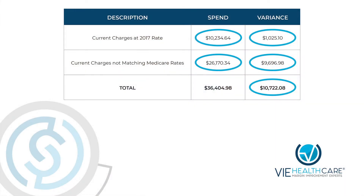They didn't have time to verify that line items matched contract pricing. As you can see, $10,234.64 was billed at the 2017 Medicare rate, resulting in an overcharge of $1,025. A second item with current charges not matching any Medicare rate totaled $26,170.34, with an overcharge of $9,696.98 — totaling approximately $10,000 in overcharges. This is huge.